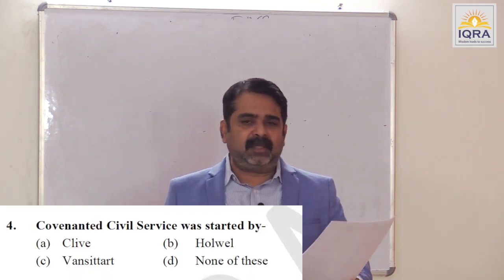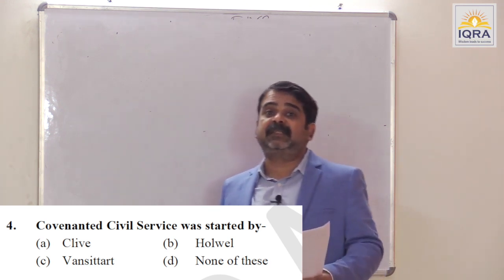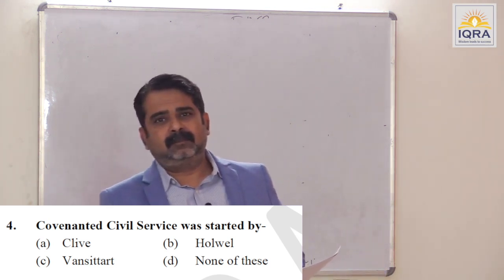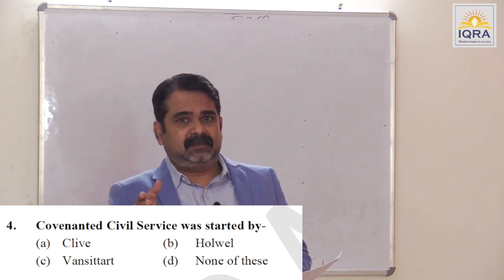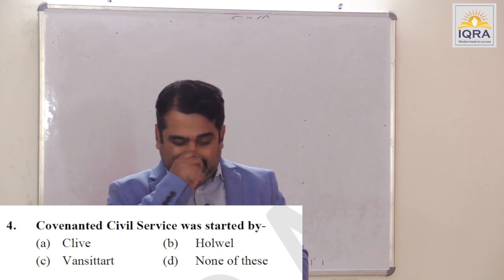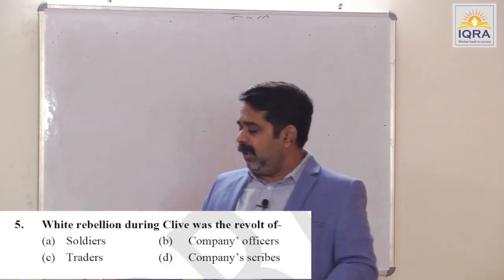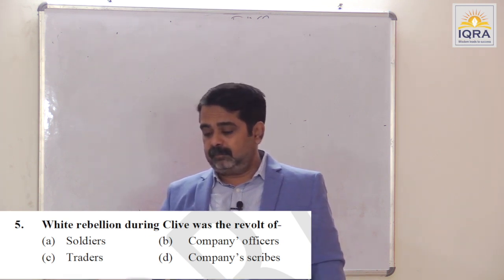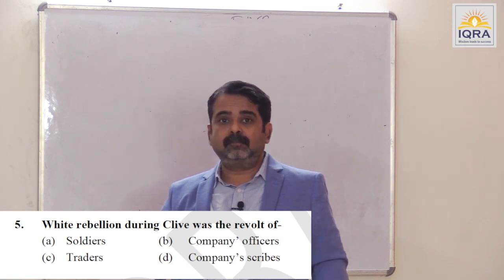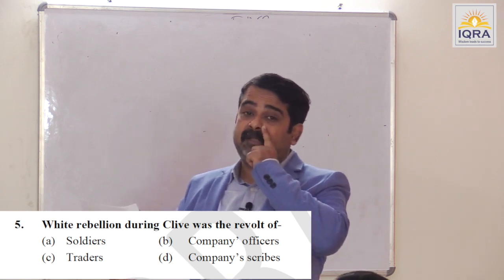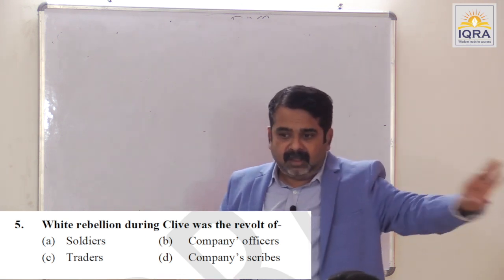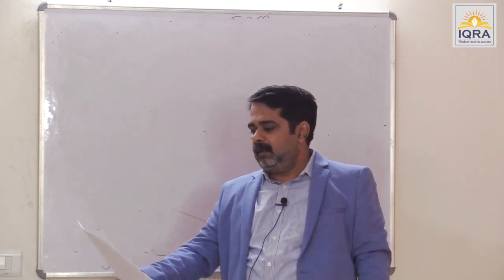Covenanted Civil Service was started by Clive — 'covenanted' means civil service with conditions. In 1765 the company became a political power, so now they required civil servants. Fourth answer is A. White Rebellion during Clive was a revolt of soldiers who revolted for double batta. Clive said batta would only be given to soldiers working outside Bihar and Bengal; soldiers stationed at Monger revolted. Fifth answer A.